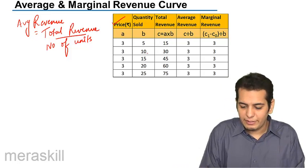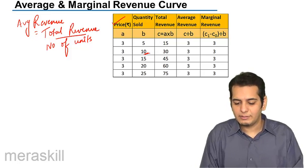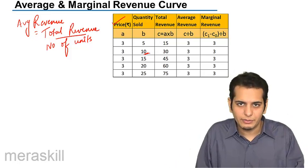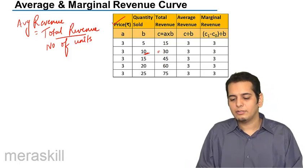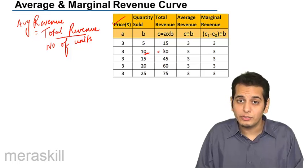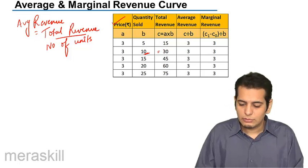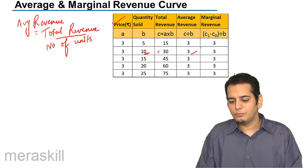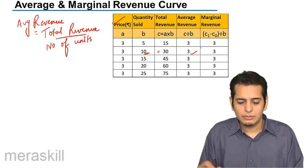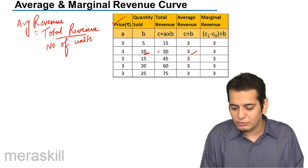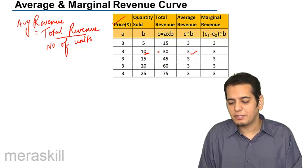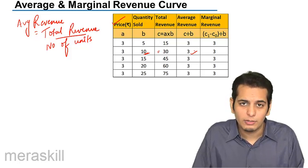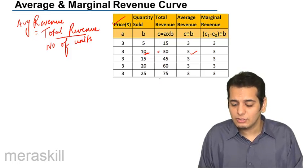Now what will be the case if I sell 10 units? If I sell 10 units and each unit costs rupees 3, in total I will be earning a revenue of 30 rupees. When I earn 30 rupees by selling 10 units, I can calculate my average revenue to be rupees 3. Average revenue is total revenue by number of units — 30 by 10 gives me 3. So the average revenue is rupees 3 per product.